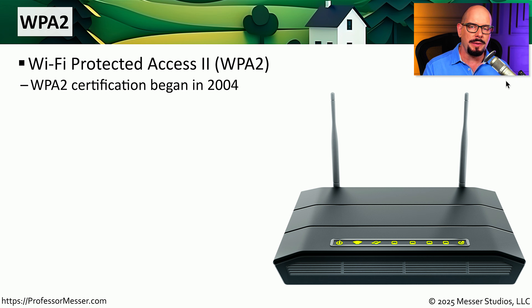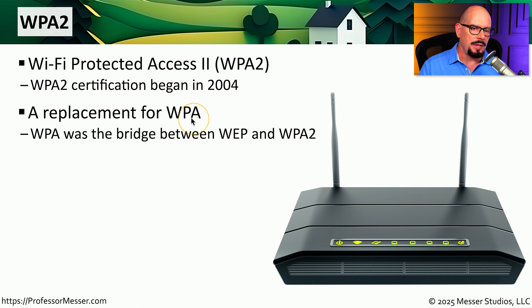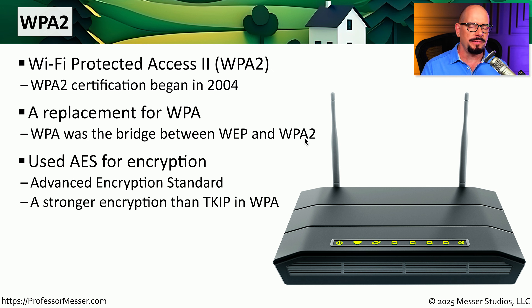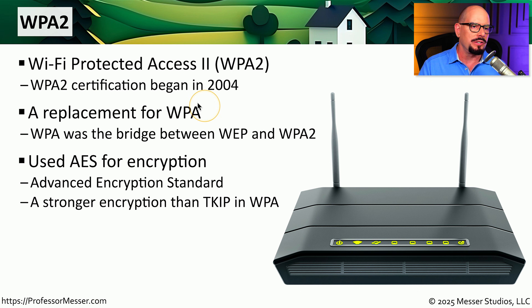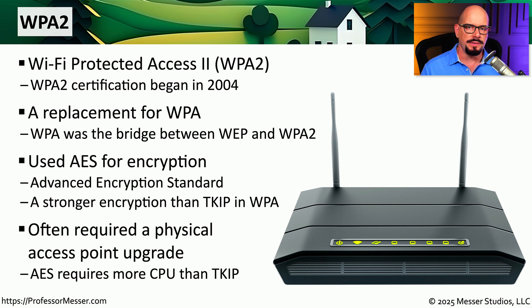That transition period where we were using WPA didn't last very long. In 2004, we introduced WPA2 — that's Wi-Fi Protected Access Version 2. WPA2 used a stronger type of encryption known as AES, the Advanced Encryption Standard. This was a stronger encryption method than TKIP, but in many cases it required additional processing power, which means we needed to replace access points to enable WPA2 encryption. This change happened relatively quickly, and most organizations were glad to swap out their access points for better encryption. WPA2 has continued to provide strong encryption, and you'll still see many wireless networks running WPA2 as the encryption standard.